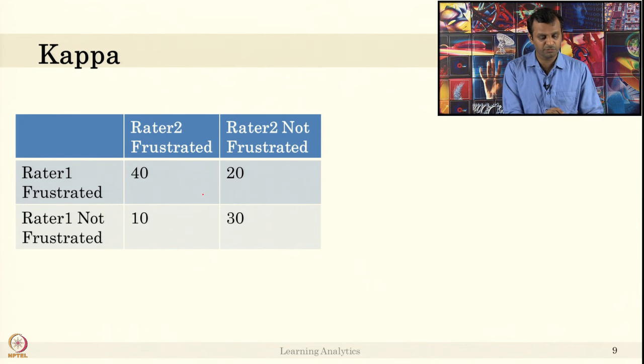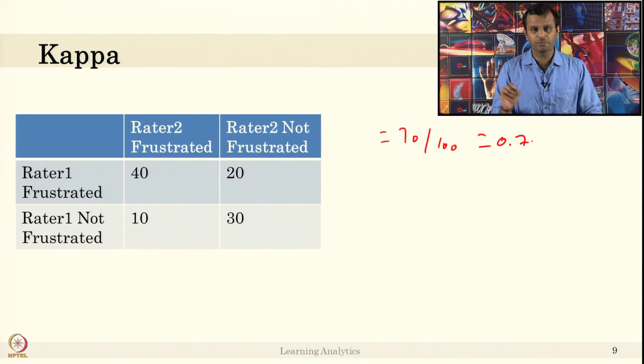What is the accuracy? Simple to compute. There is 40 plus 30, 70 by total number of observations, that is 70 by 100. Very simple to compute.